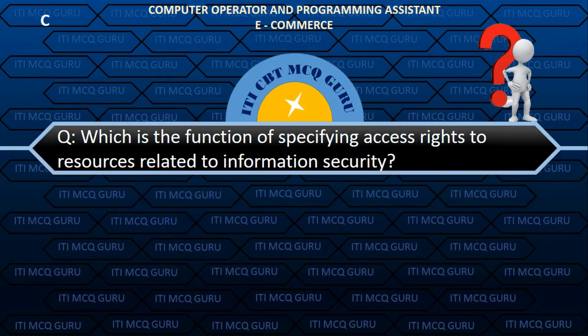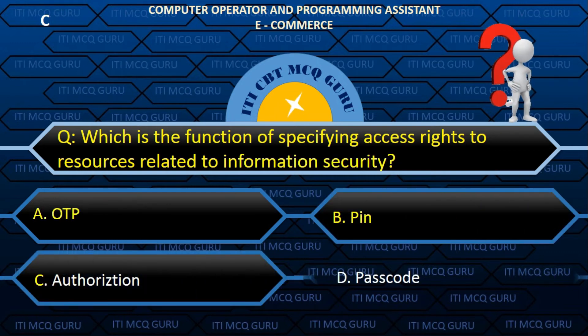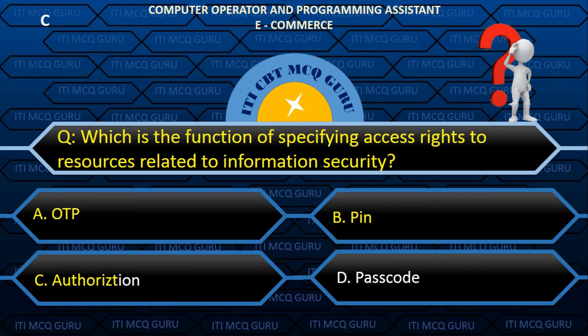Which is the function of specifying access rights to resources related to information security? C. Authorization.